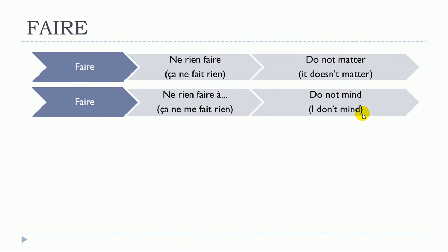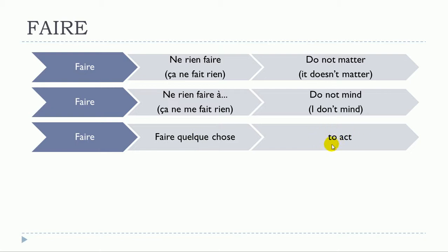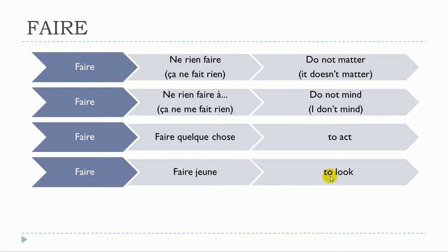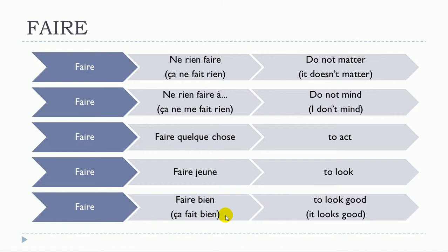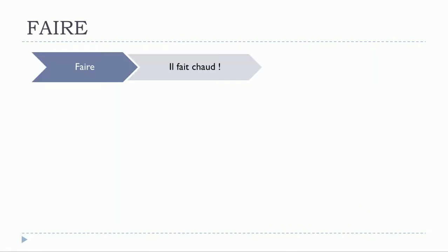Then faire quelque chose—in that case it would be 'to act'. Faire jeune—when you use this expression il fait jeune, you're talking about the appearance, so it would be 'to look', to look young. Faire bien—ça fait bien—the translation would be 'to look' as well, so it looks good.